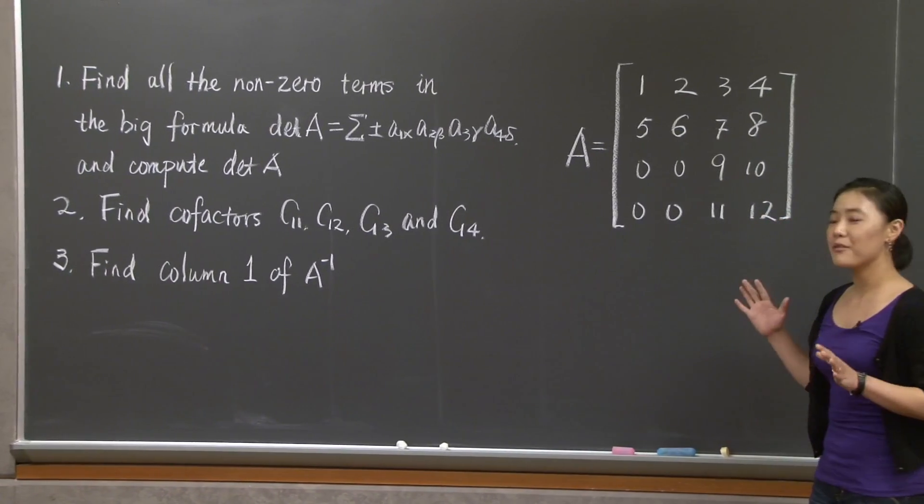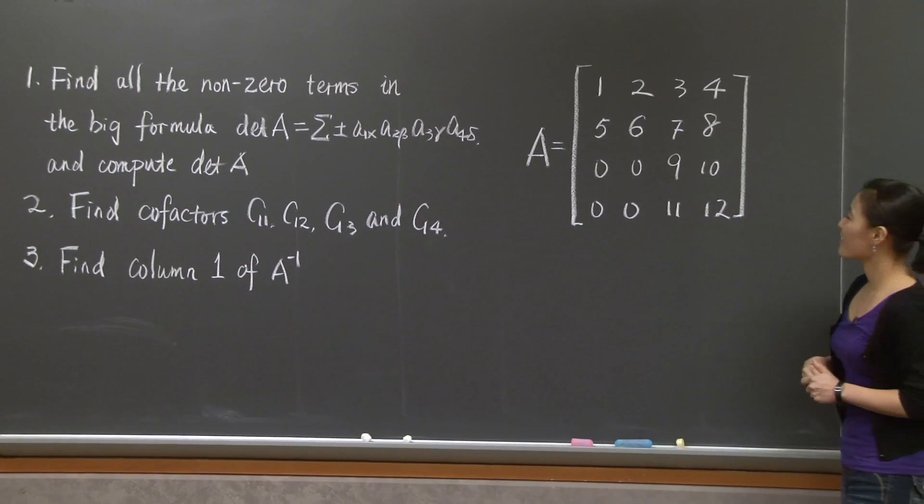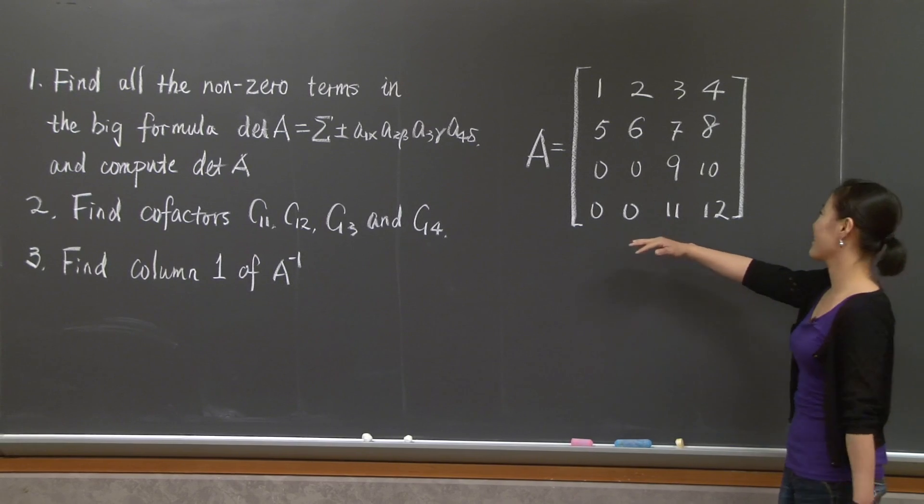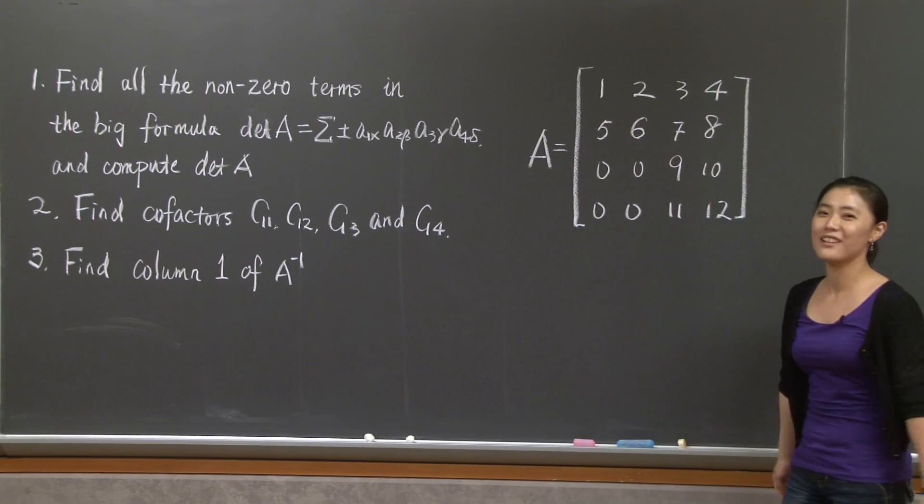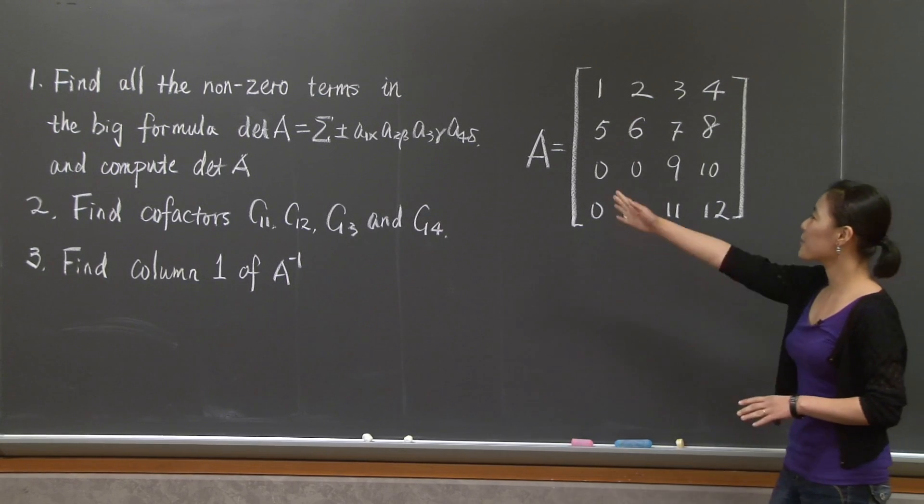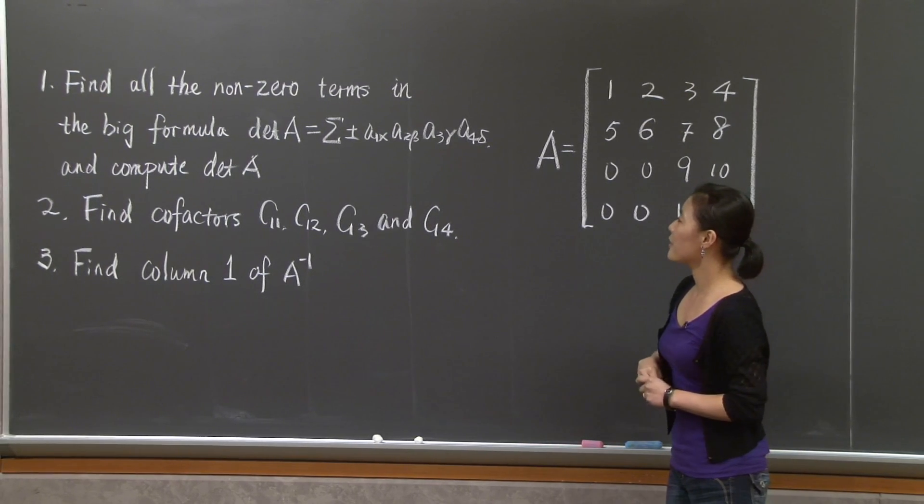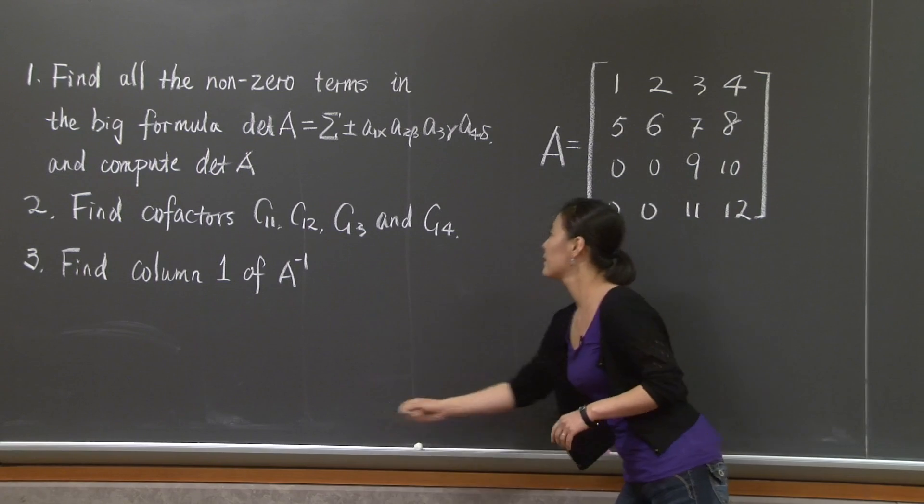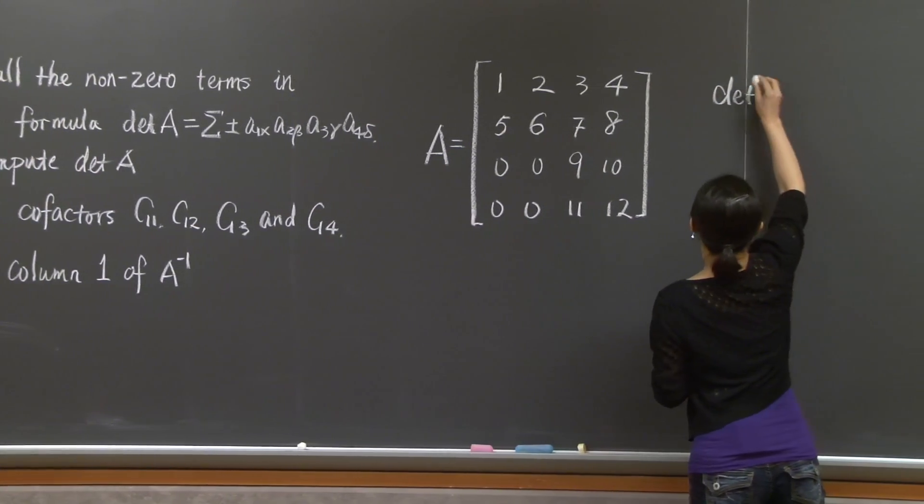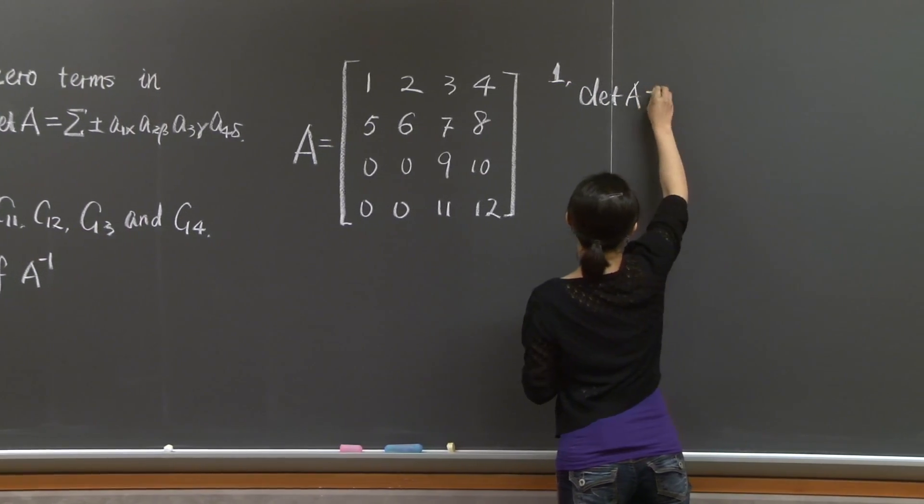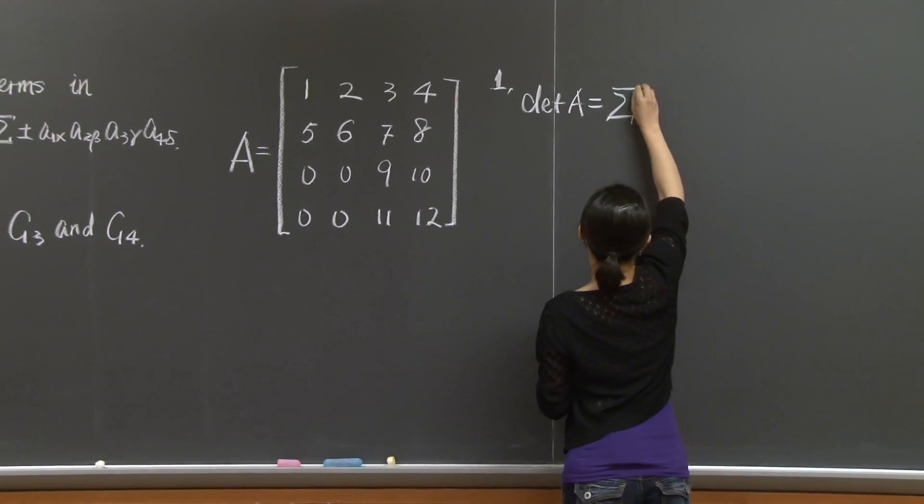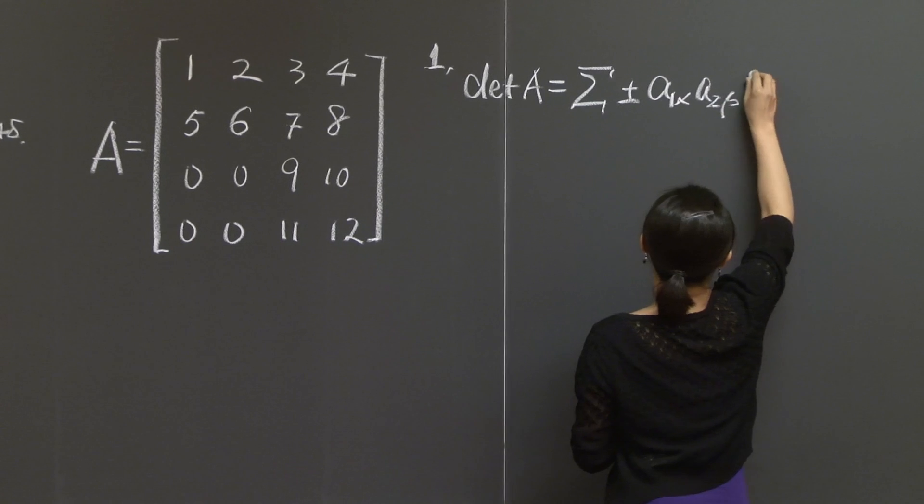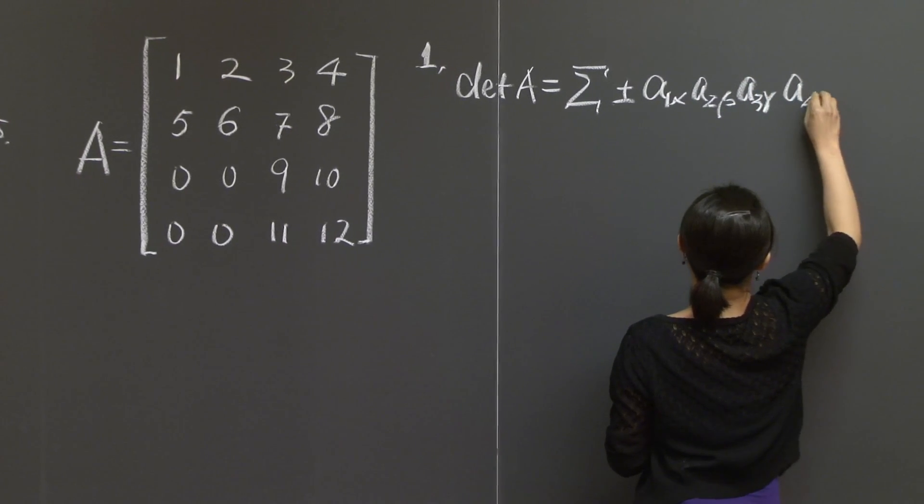Let's solve this problem together. We're looking at a 4 by 4 matrix A here. This matrix is made up by the examiner in a rather casual way, because you have numbers from 1 to 12 as the entries of this matrix. In the first part, we want to find all the non-zero terms in this big formula to compute determinant of A.